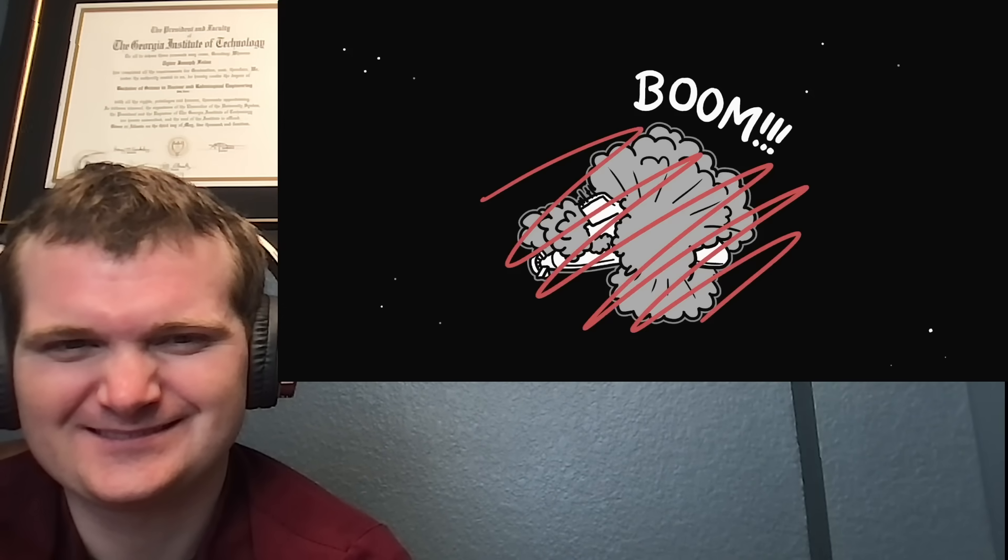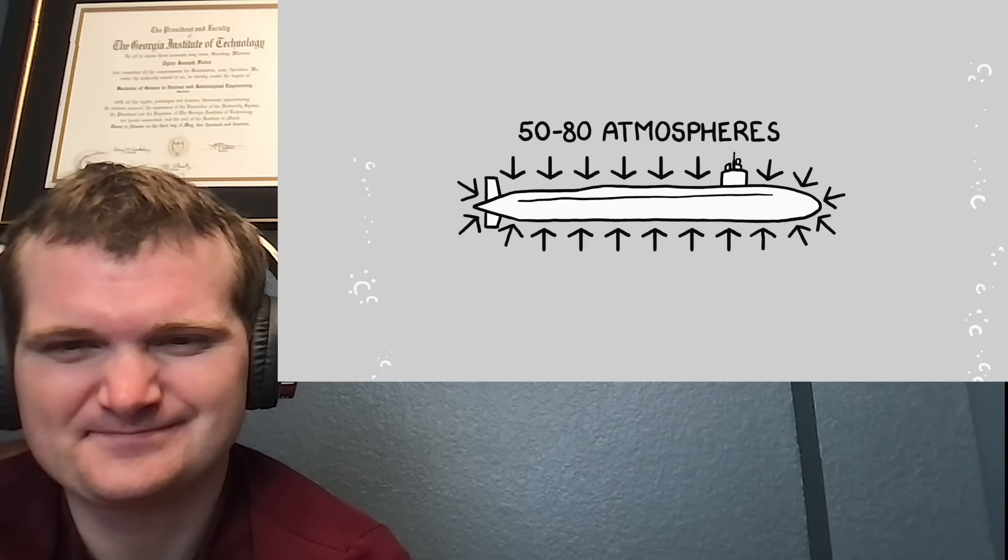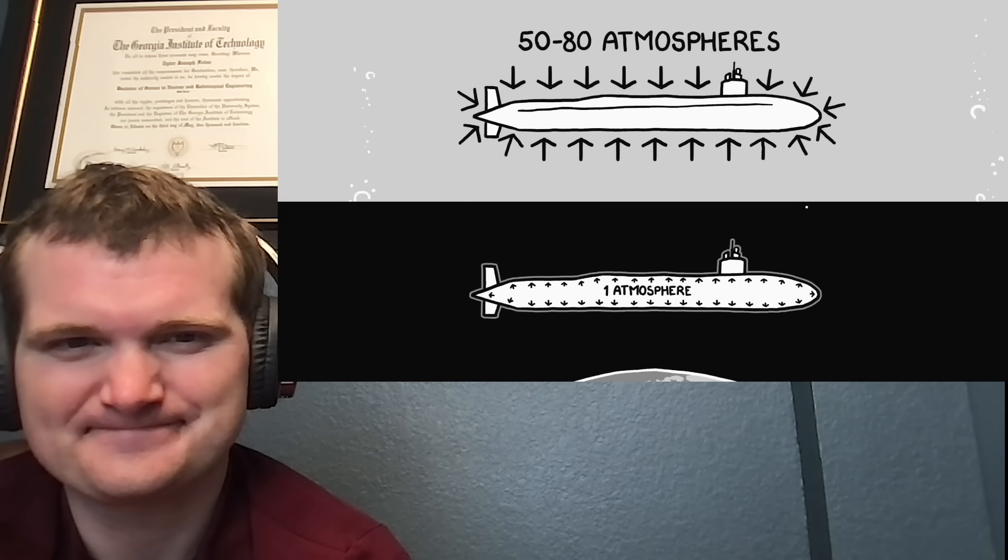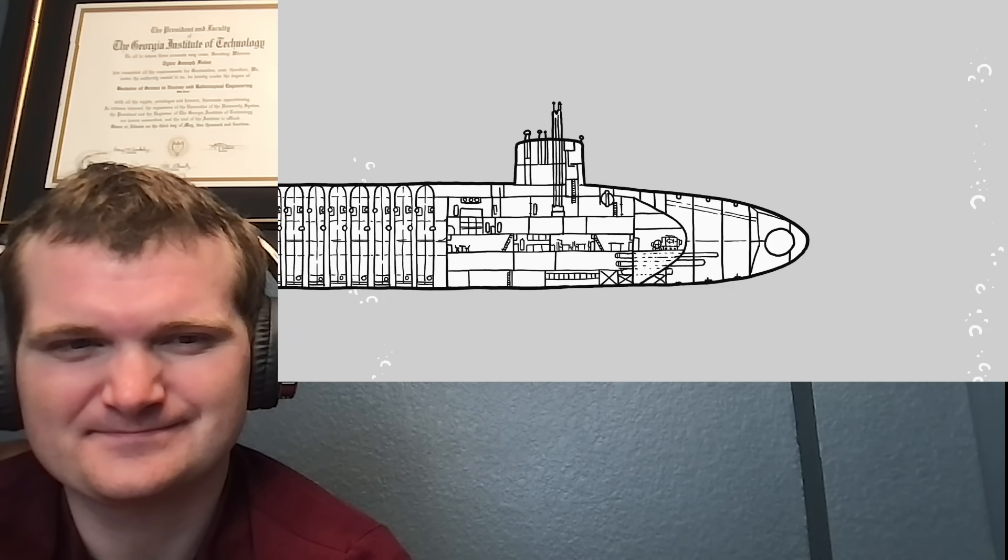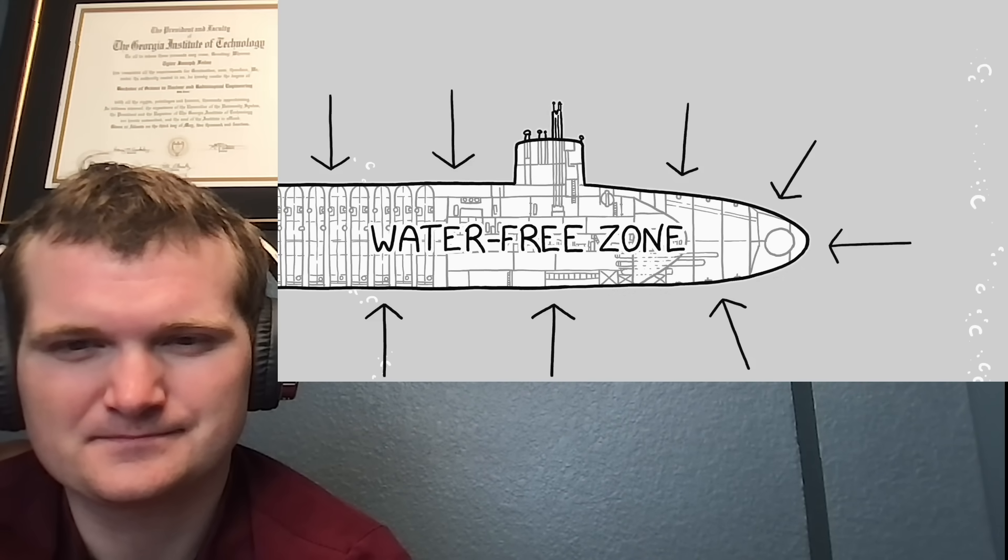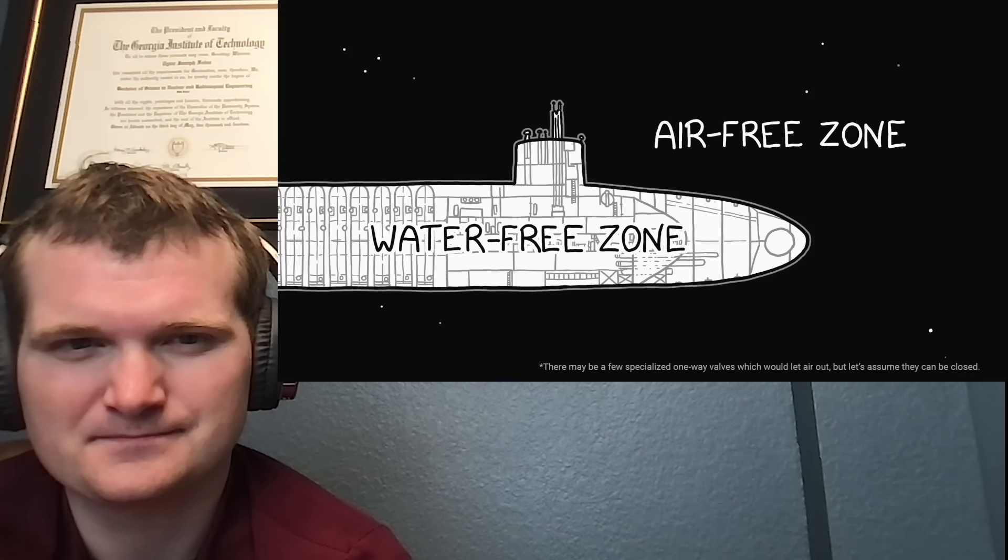The submarine wouldn't burst. Submarine hulls are strong enough to withstand 50 to 80 atmospheres of external pressure from water, so they'd have no problem containing one internal atmosphere of pressure from the air. The hull would likely be reasonably airtight. Although watertight seals don't necessarily hold back air, the fact that water can't find a way through the hull under 50 atmospheres of pressure suggests that when the sub is in space, air won't escape quickly.